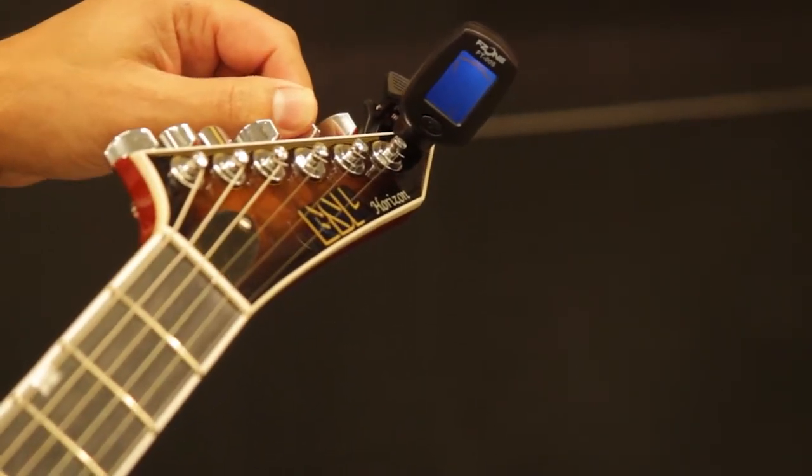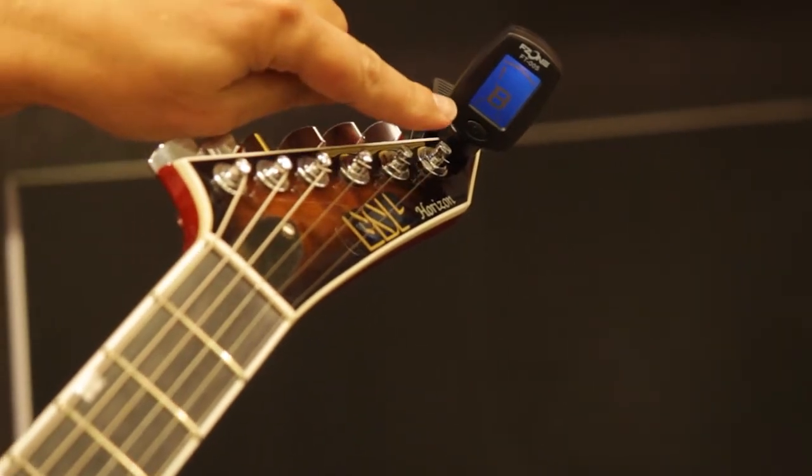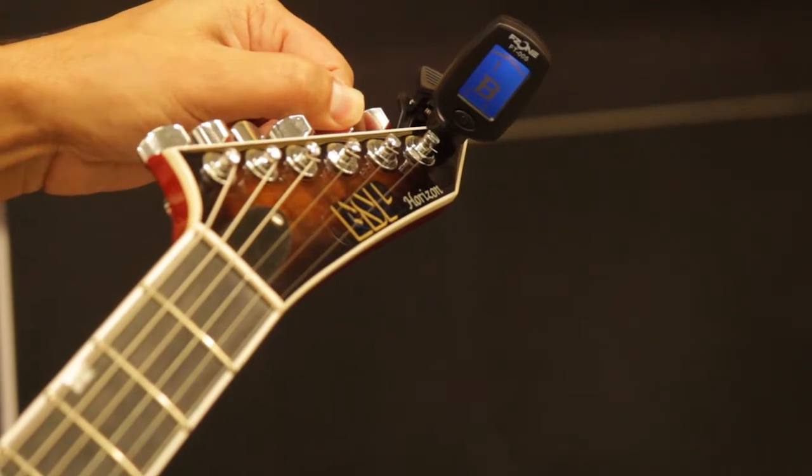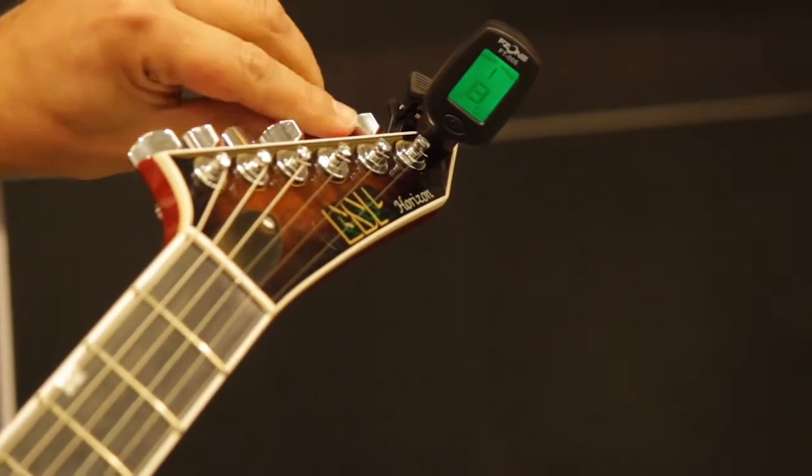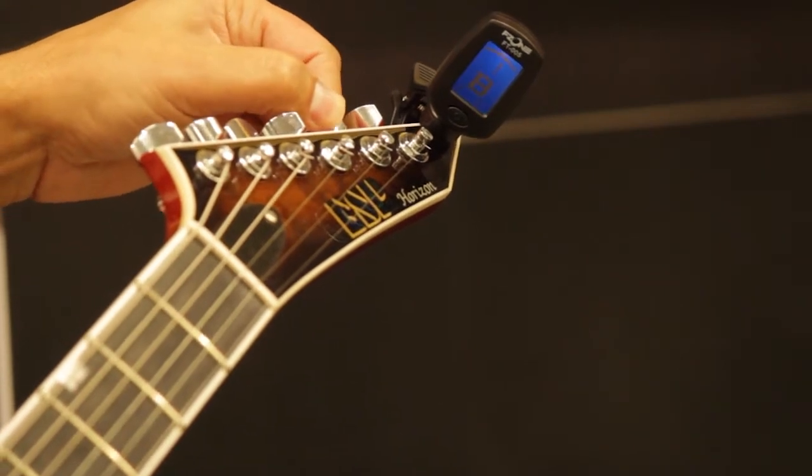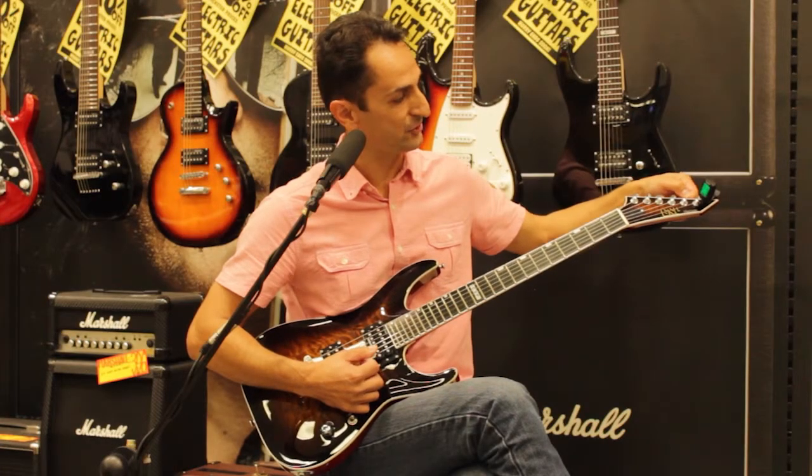So the second string is a B and it should come up to show you as a number two up on the screen. So again, you continue to turn the key upwards, tighten it until it goes green and then that particular string is in tune.